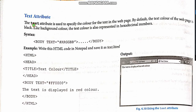The next attribute of the body tag is the text attribute. The text attribute is used to specify the color for the text throughout the web page. The text color of the web page is black by default — if you do not mention any text attribute, the default color is black. But if you want to specify any other color, you use this text attribute: body, space, text equals to, and within quotes you write the color you want — either the name of the color or the hexadecimal number for the color.